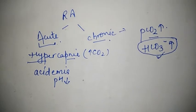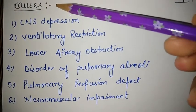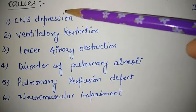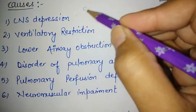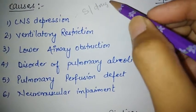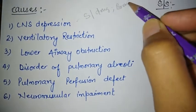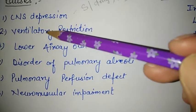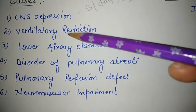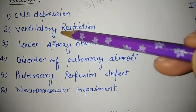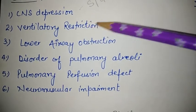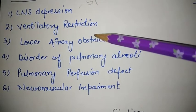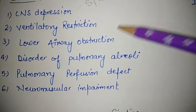There are various causes of respiratory acidosis. First is CNS depression — when a person is given sedation, takes an overdose of a drug, or sustains a head injury, these can lead to respiratory acidosis. Second is ventilator restriction — improper ventilation or restriction of gas exchange due to rib fracture, flail chest, pneumothorax, or hemothorax. Third is lower airway obstruction, where obstruction causes failure to maintain normal gas exchange, for example in severe asthma or bronchospasm.